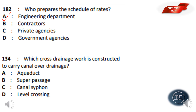Which cross drainage work is constructed to carry a canal over drainage? The options are: Aqueduct, Super Passage, Canal Syphon, Level Crossing. If the canal and drainage reach the same level, it is a Level Crossing. An Aqueduct carries canal water over drainage. A Super Passage and Canal Syphon are also discussed as cross drainage options.